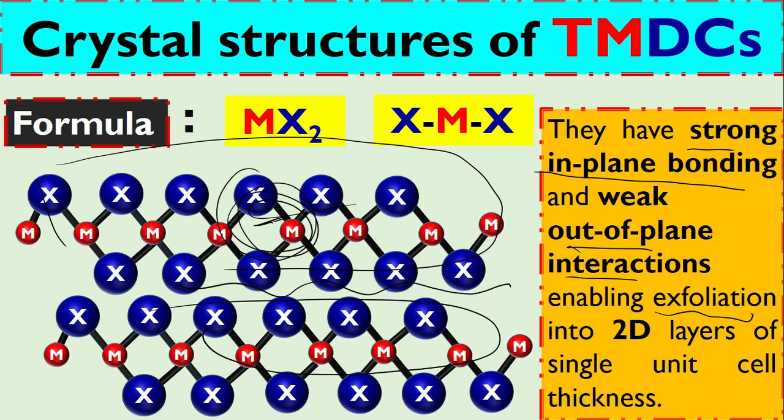Exfoliation means when you make layers from three-dimensional material to get two-dimensional material from three-dimensional layers. If it is through etching, that is the etching method. If it is through mechanical disturbance, that is called the mechanical method.